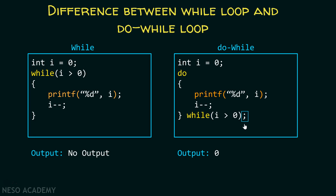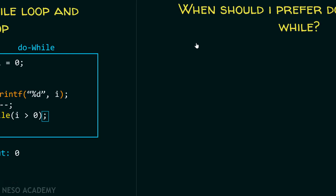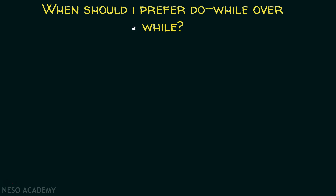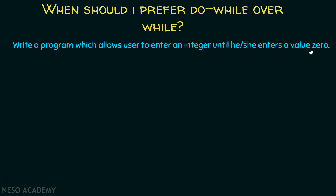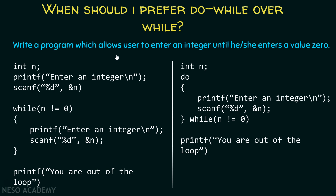After considering the difference between while loop and do while loop, let's address one important question: when should I prefer do while over while? Suppose we need to write a program which allows the user to enter an integer until he or she enters a value 0. I have written two different versions of this program — the first version uses a while loop, and the second version uses a do while loop.